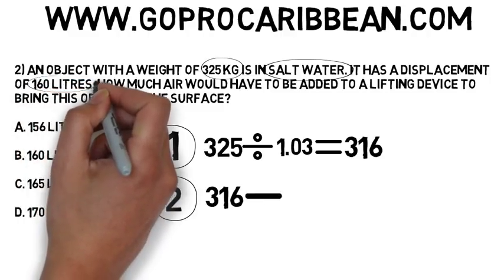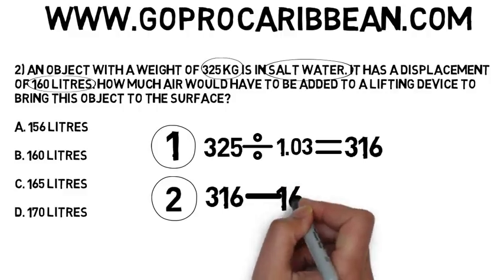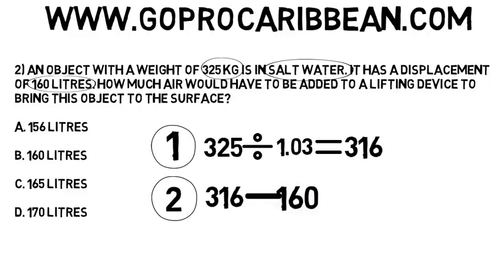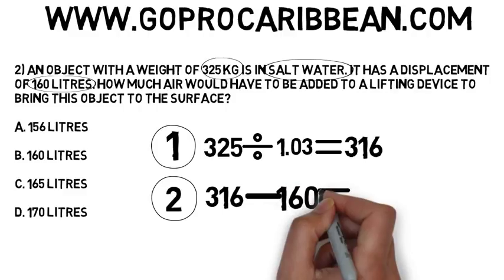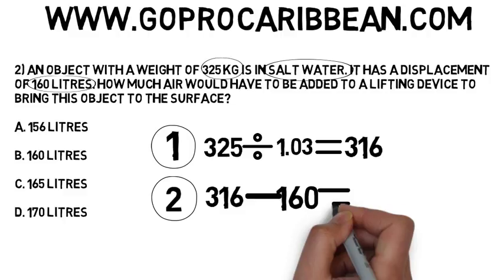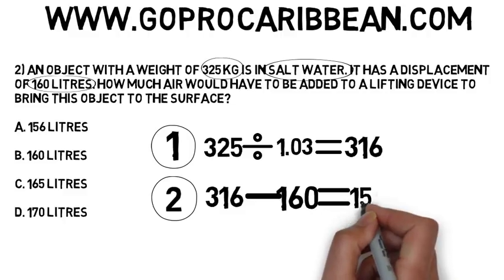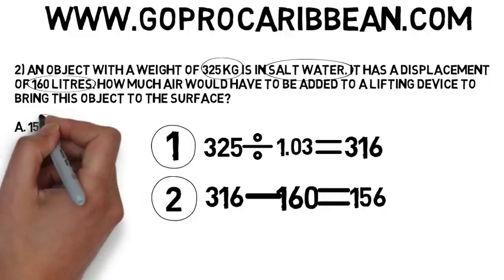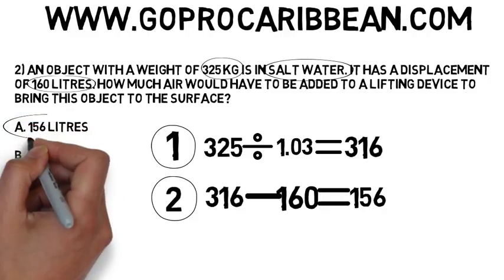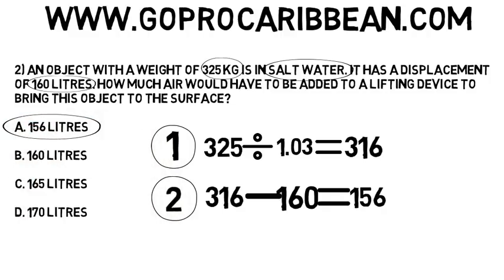Now let's take that total amount — 316 liters — and work out how much water it already displaces based on its volume. That's given to us in the question: 160 liters. So the balance — what we need to displace using a lift bag — is 316 minus 160, which is 156 liters, to make it neutrally buoyant.